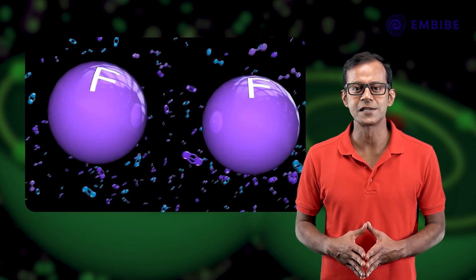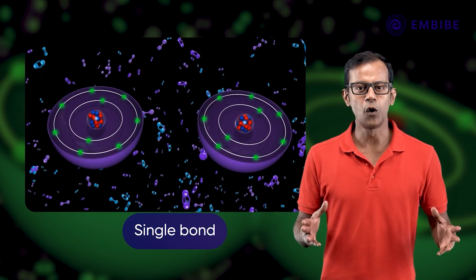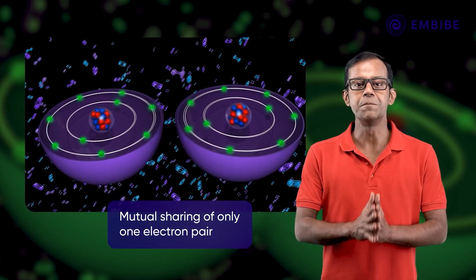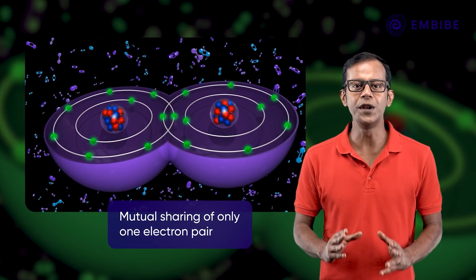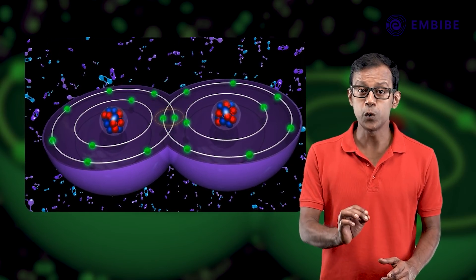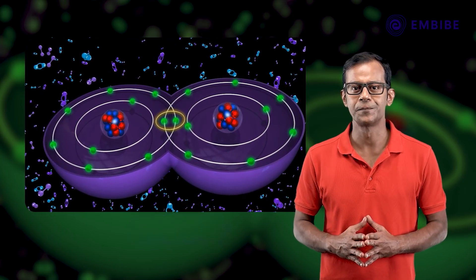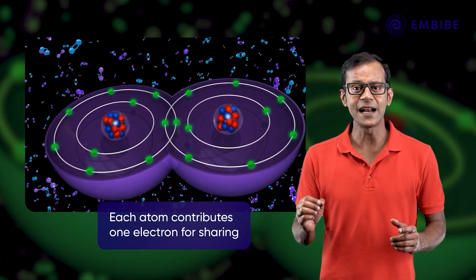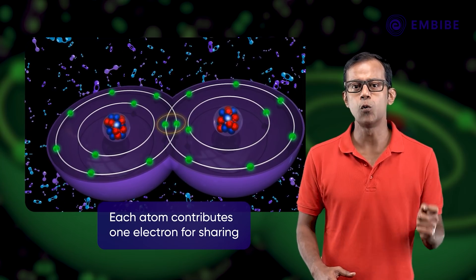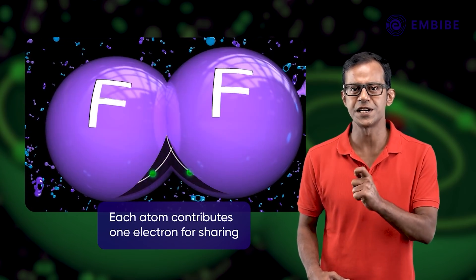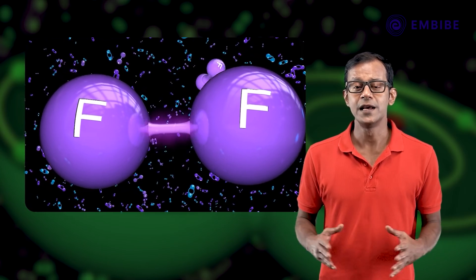Let us study the various types of covalent bonds. Single bond: A covalent bond formed by the mutual sharing of only one electron pair between two atoms is called a single bond. Here, each atom contributes only one electron for sharing. A single bond is denoted by placing a single line between the two atoms.